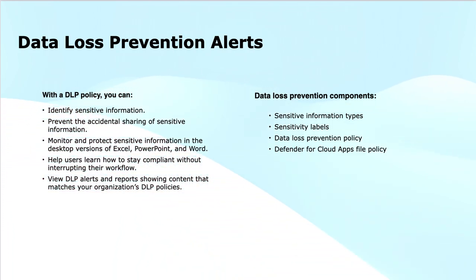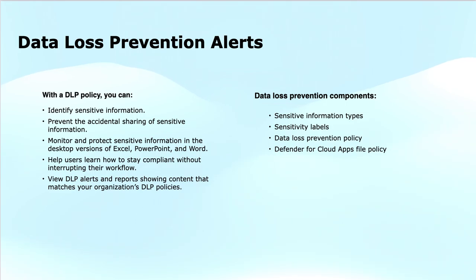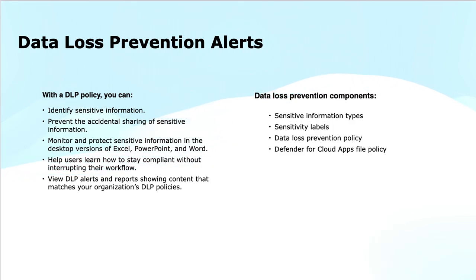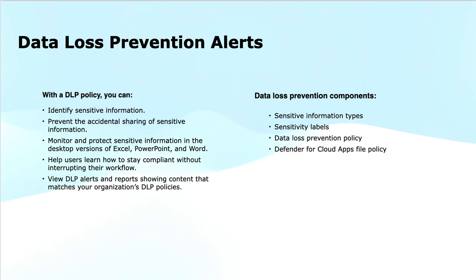The third component is a data loss prevention policy. This is a set of rules and actions that define how to detect and protect sensitive data from being shared or leaked inappropriately. A DLP policy can be customized to prevent users from sending certain types of sensitive data outside the organization. It can trigger alerts, block actions, or notify users if they are about to share sensitive information. Policies can be applied to emails, documents, and other data within Microsoft 365.